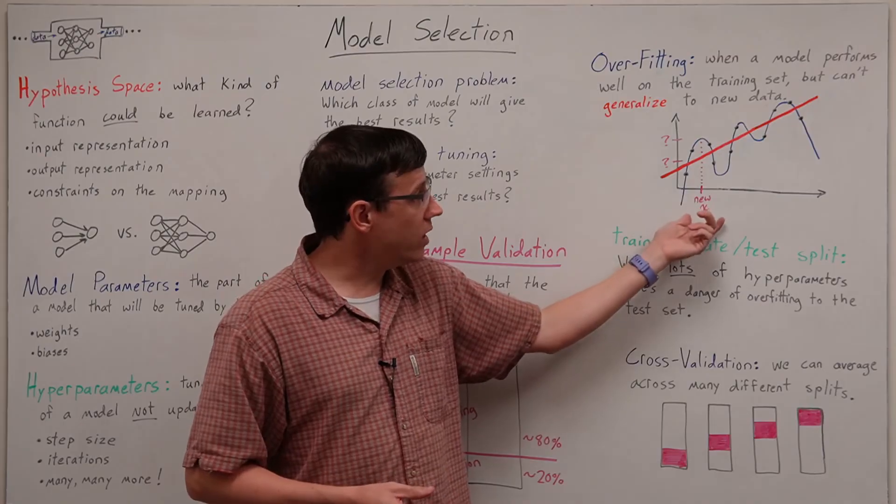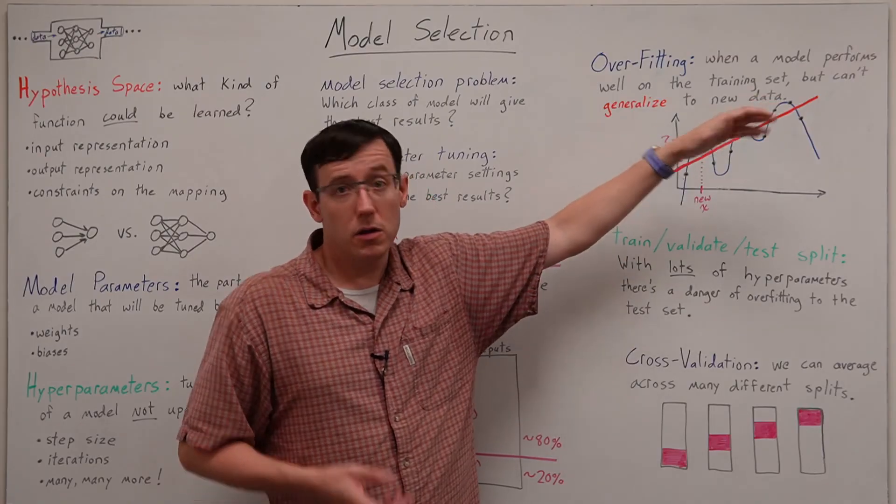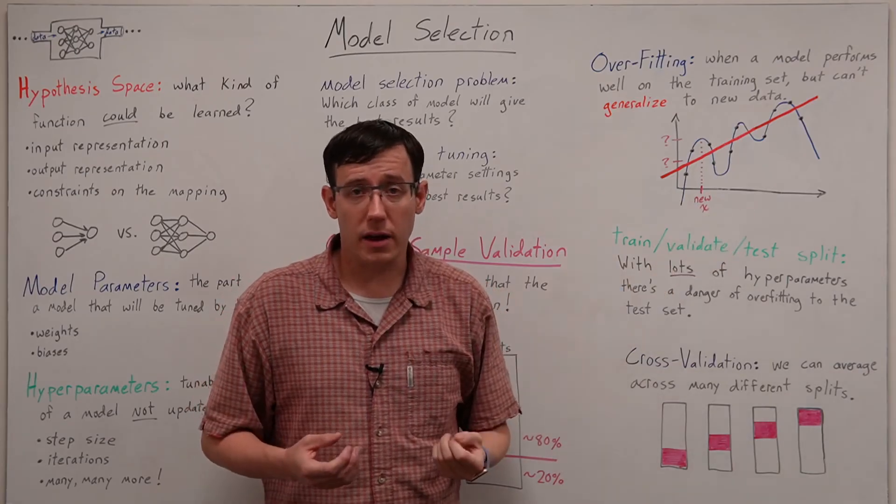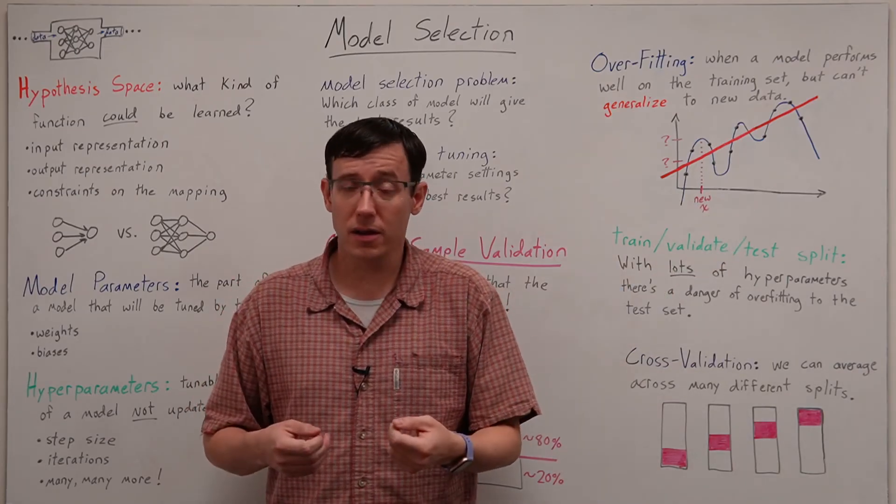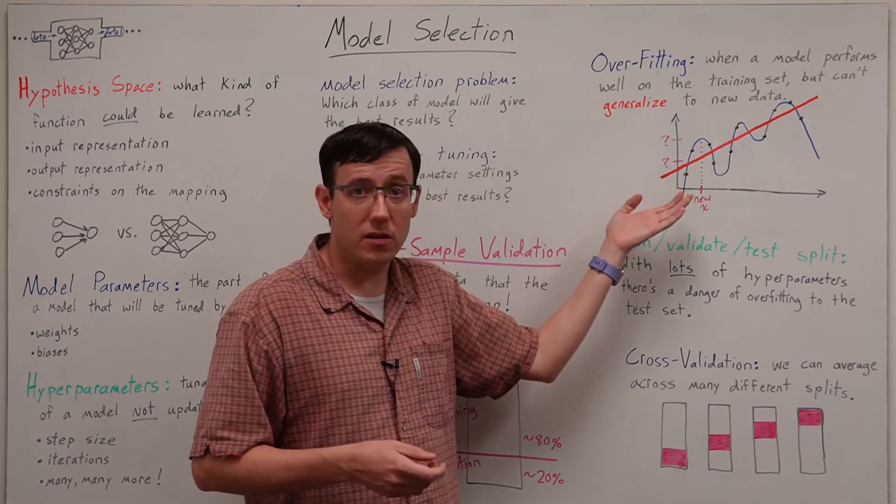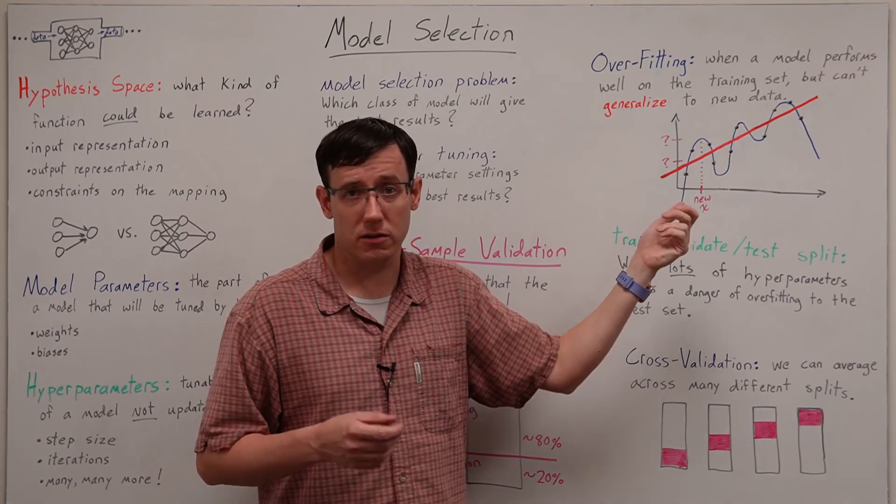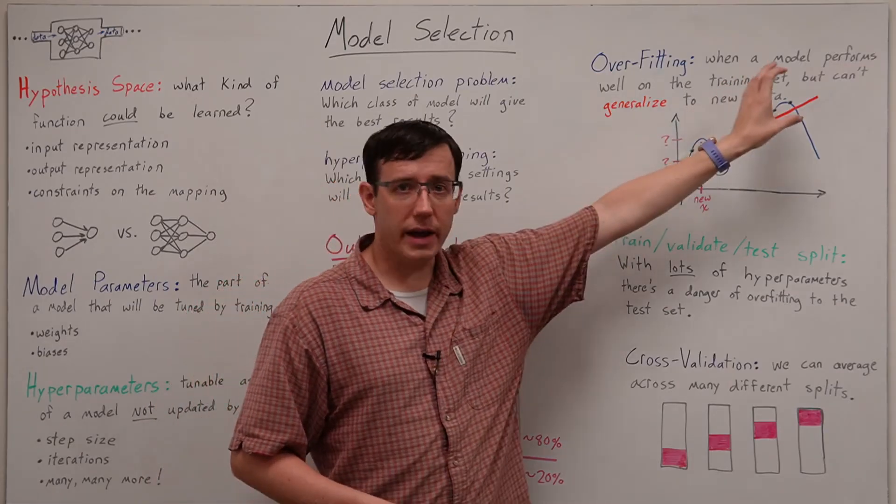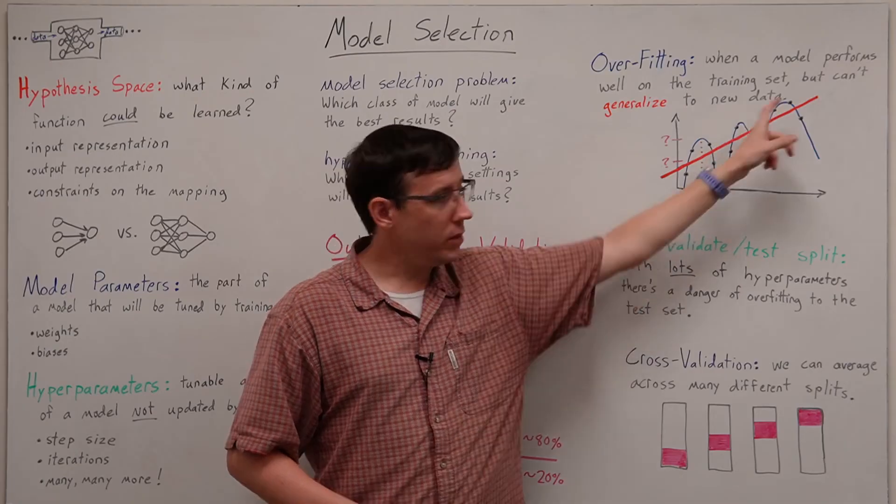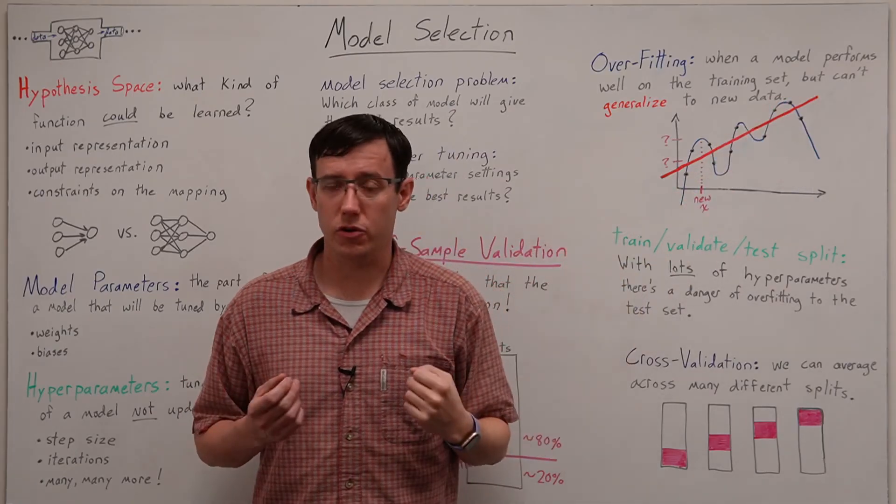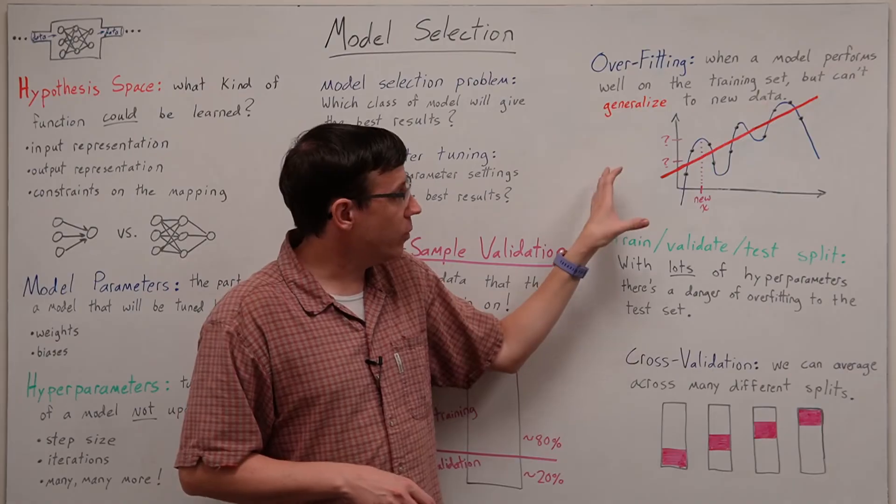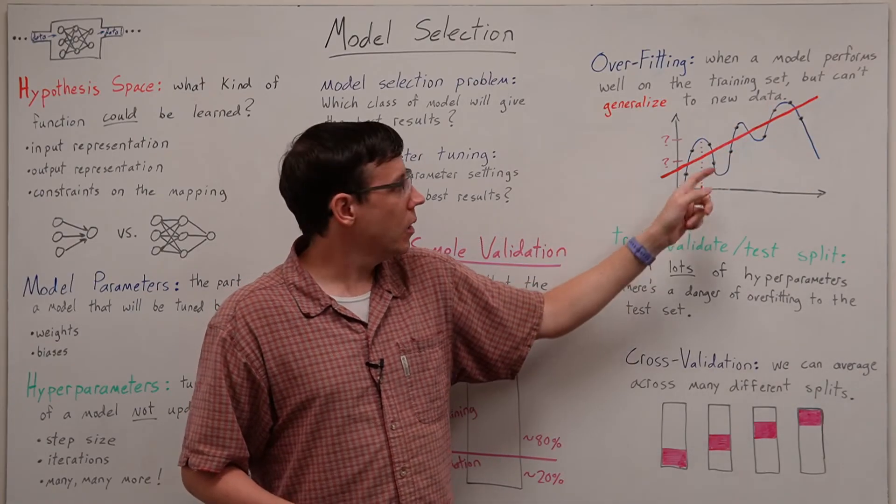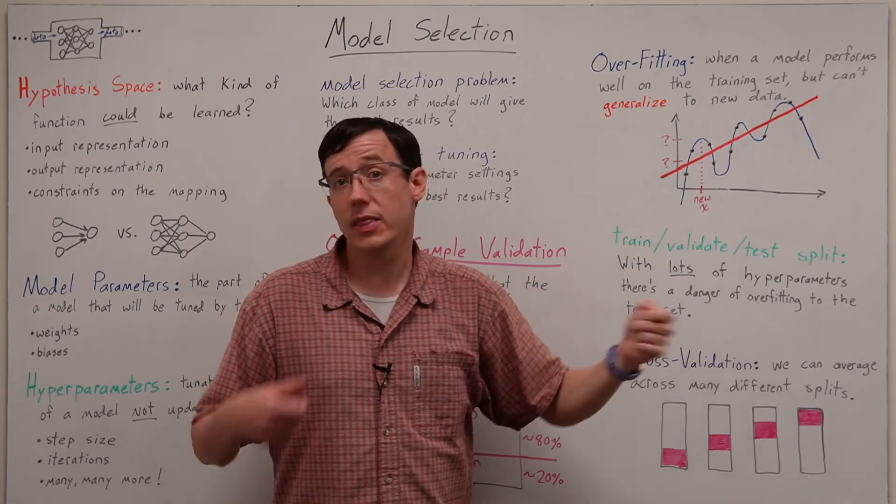But that intuition that the red model might generalize better than the blue one is way less valuable than an actual experiment that demonstrates which of these is better at predicting data it hasn't seen. So in this case instead of training on the entire data set we could randomly pick a couple of points to leave out of the training and then after we run our training algorithm on all but those points we can ask which model got closer on the points we held back.